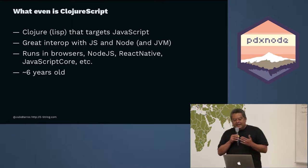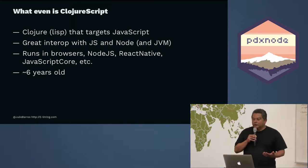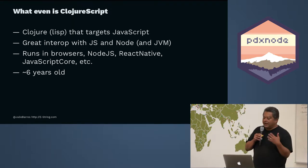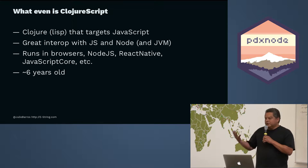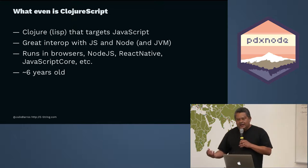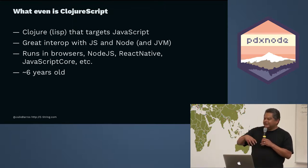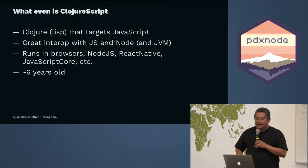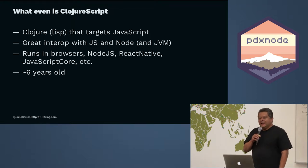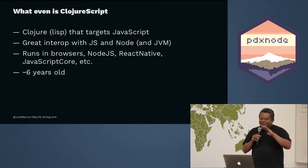ClojureScript has great interop with JavaScript and Node, and Clojure with the JVM. ClojureScript runs in browsers, on Node.js, in React Native environments embedded in iPhones and Android devices, and on Apple's JavaScript Core engine on the desktop. It runs almost anywhere that JavaScript runs, and it's about six years old and has been awesome for about five years.